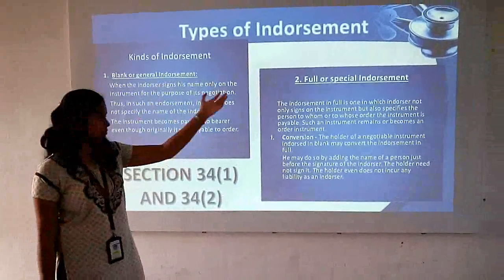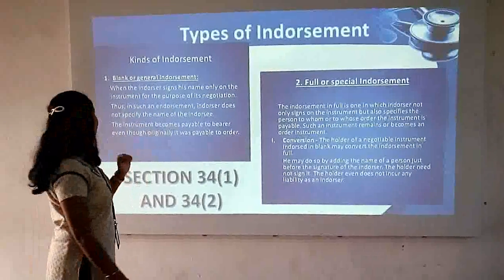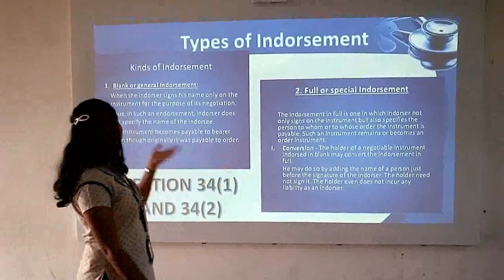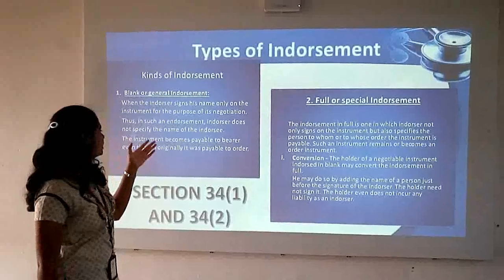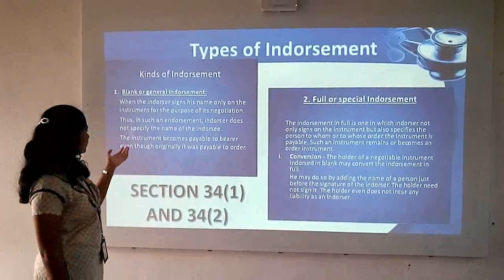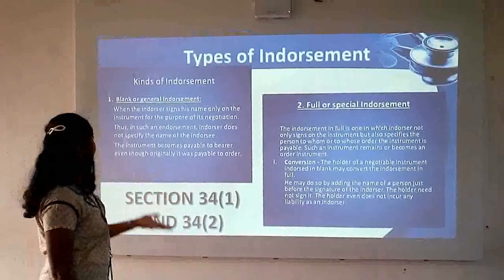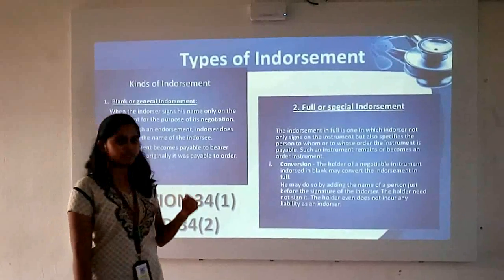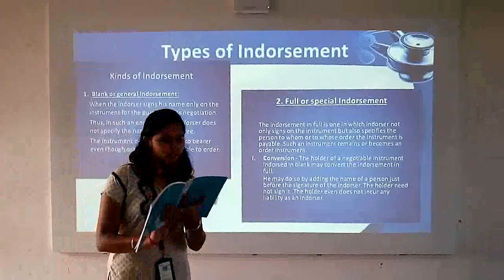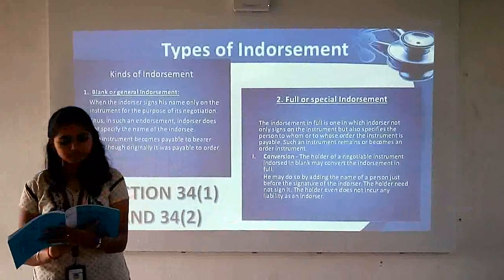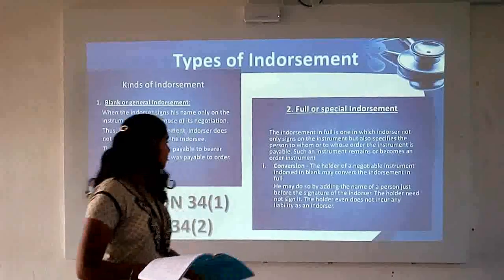Next are the types of endorsement. First is blank or general endorsement. When the endorser signs his name only on the instrument for the purpose of its negotiation, this is a blank endorsement — the endorsement does not specify the name of the endorsee. The instrument becomes payable to the bearer even though ordinarily it was payable to order. Section 24, subsection 1 explains that an endorsement in blank specifies no endorsee and a bill so endorsed becomes payable to bearer.